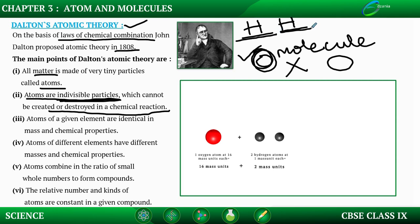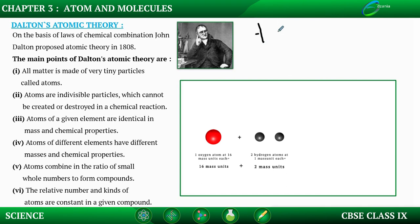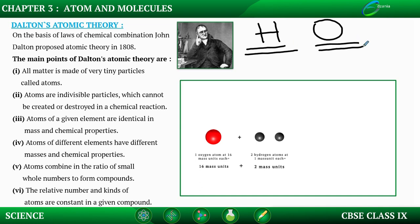The fourth point is that atoms of different elements have different masses and chemical properties. For example, if we take hydrogen and oxygen, these two are different atoms, so they will have different chemical combinations, different chemical properties, and different mass — everything will be different because they are different atoms.